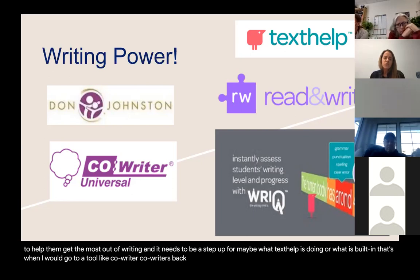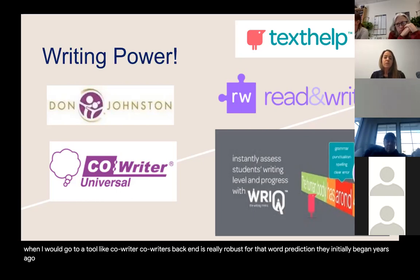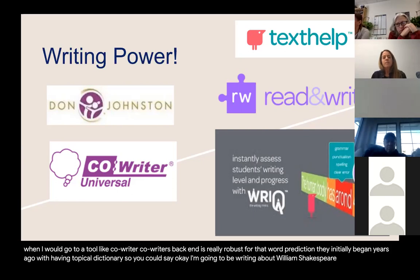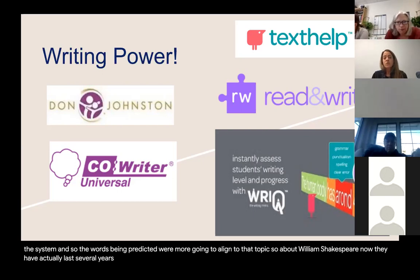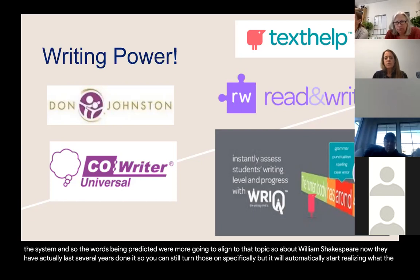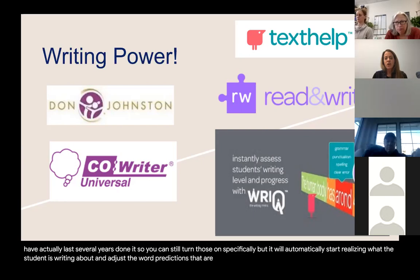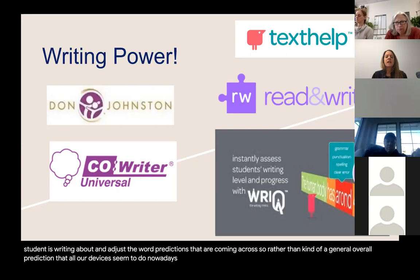If students really rely on word prediction, that's when I'd go to a tool like Co:Writer, whose back-end is really robust for word prediction. Co:Writer initially had topical dictionaries — you could say you're writing about William Shakespeare, turn that on, and the predicted words would align to that topic. Now, over the last several years, it automatically detects what the student is writing about and adjusts the word predictions accordingly, rather than using a general overall prediction — which can be really helpful.